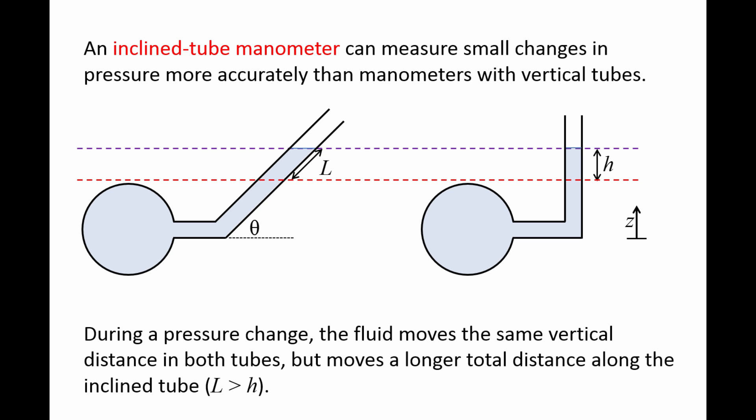If the angle theta were very small, the fluid would travel a much longer distance along the tube. That is, L would be much greater than H, which allows you to more accurately measure small changes in pressure.